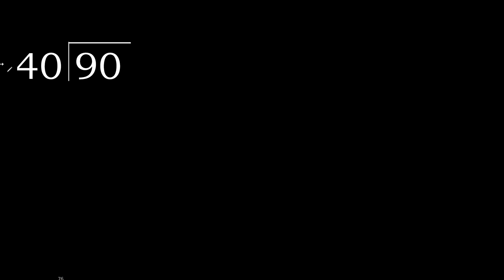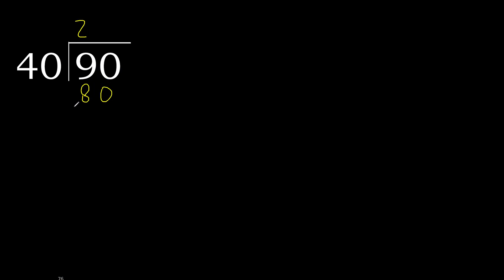90 divided by 40. 9 is less, therefore next. 90 is not less, therefore work with 90. 40 multiplied by which number is nearest to 90 but not greater? 40 multiplied by 2 is 80 — is not greater. Multiply by 2 is not greater.